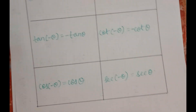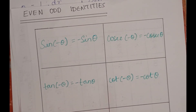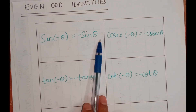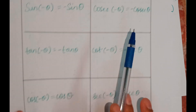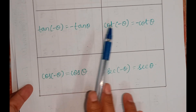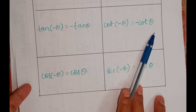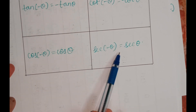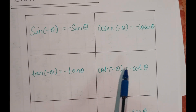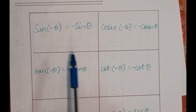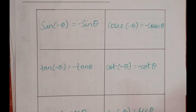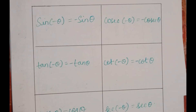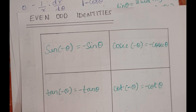Recall the even-odd identities: cot(-θ) = -cotθ, similarly sin(-θ) = -sinθ, tan(-θ) = -tanθ. For cosine and secant only, the result is positive; for the other four functions, a negative angle gives minus the function. So -cotφ = cot(-φ).